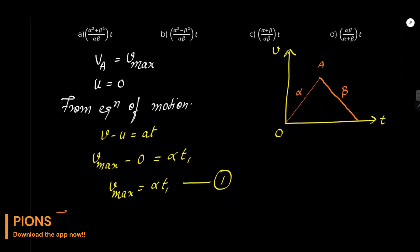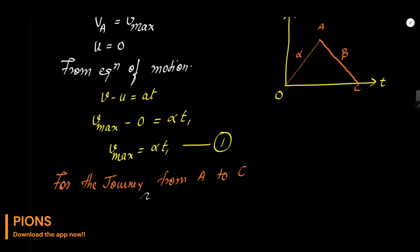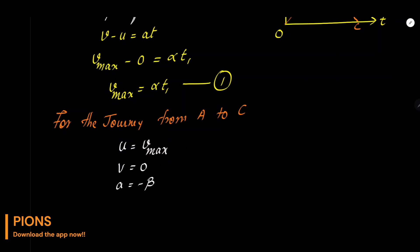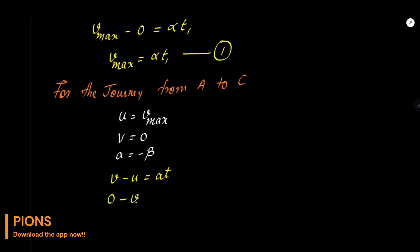For the journey from A to C — यह decelerate हो रहा है beta rate से। Initial velocity होगी v_max, जिस speed से decelerate होना शुरू हुआ, और final velocity है 0। Acceleration है minus beta। Equation of motion v − u = a·t use करें: 0 − v_max = −β·t₂। तो v_max = β·t₂।